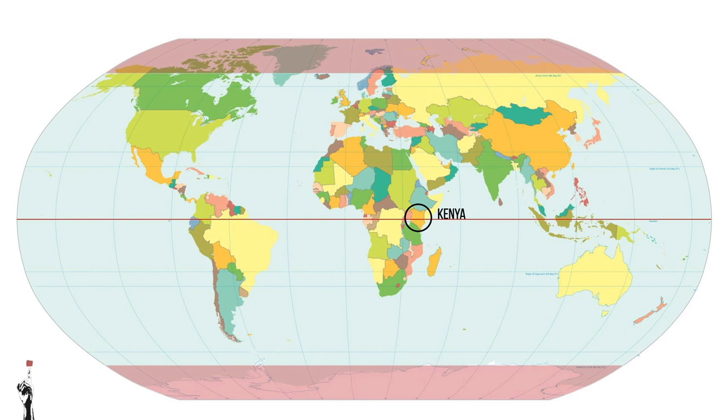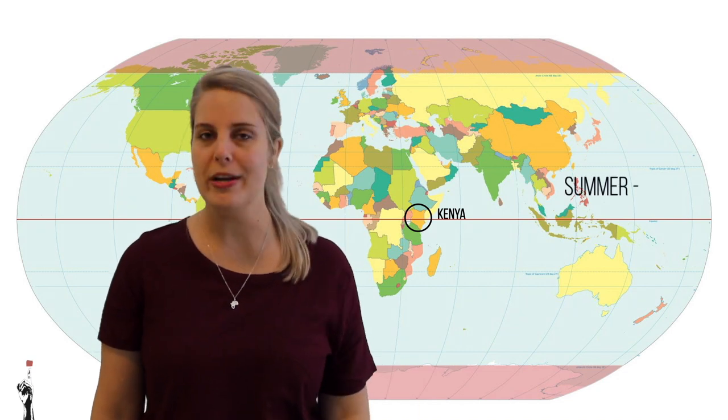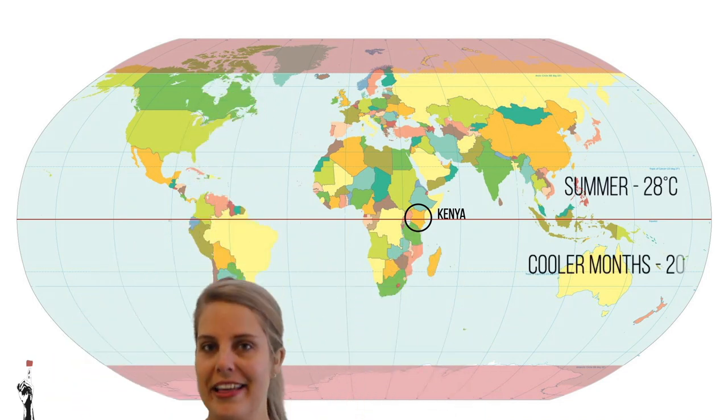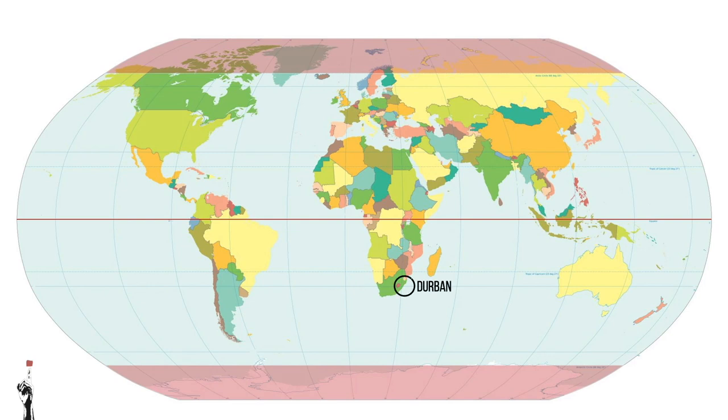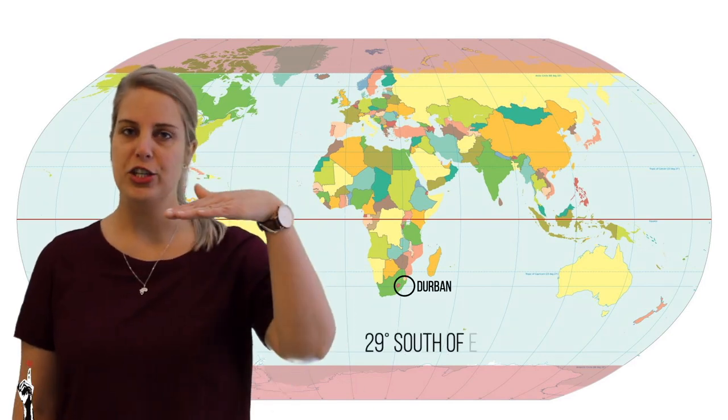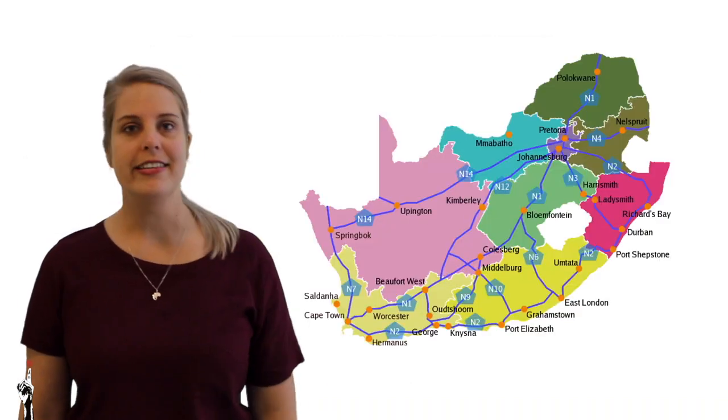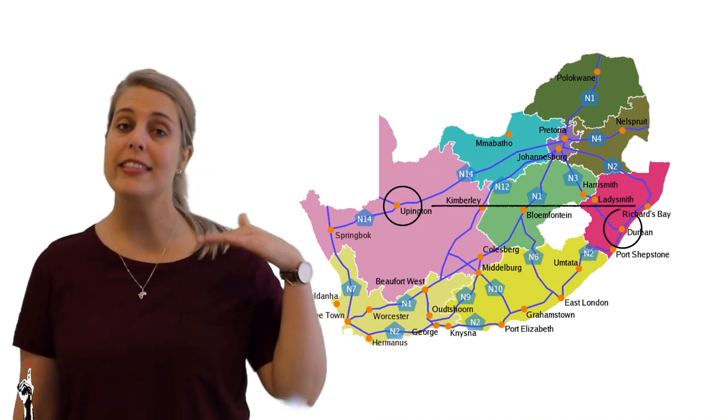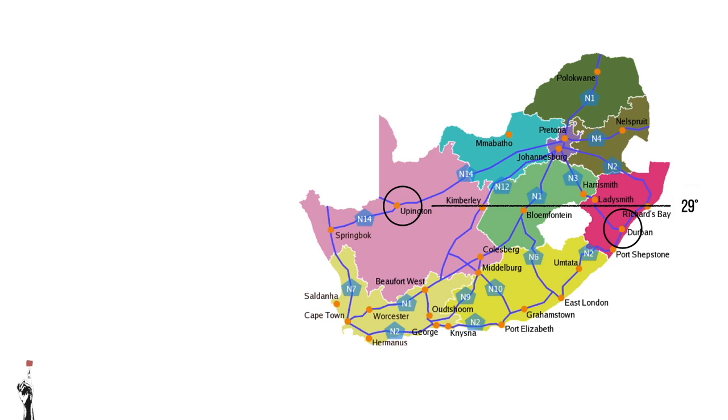Kenya in Africa is located right on the equator. Kenya's average summer temperature is about 28 degrees Celsius and its cooler months average about 20 degrees Celsius — warm all year round because of how close it is to the equator. Durban in South Africa lies at a latitude of about 29 degrees south, and Upington also lies at 29 degrees south, yet it experiences vastly different temperatures compared to Durban. Upington has very warm summers but also very cold winters, so it's important to consider other factors beyond distance from the equator.